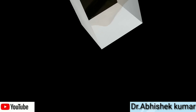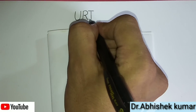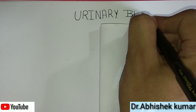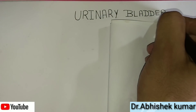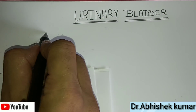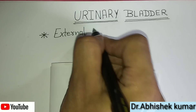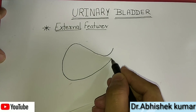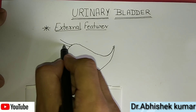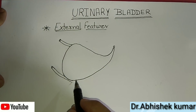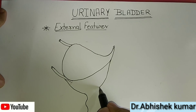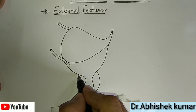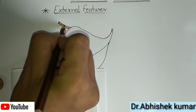Let's start our first part: the external features of the urinary bladder. As we know, the urinary bladder is the temporary storehouse of urine which gets emptied through the urethra. The bladder varies in its size, shape, and position according to the amount of urine it contains. An empty bladder is tetrahedral in shape and a full bladder is ovoid in shape. Here we can see the structure of the empty bladder, which is tetrahedral, along with the prostate shown in brown color.